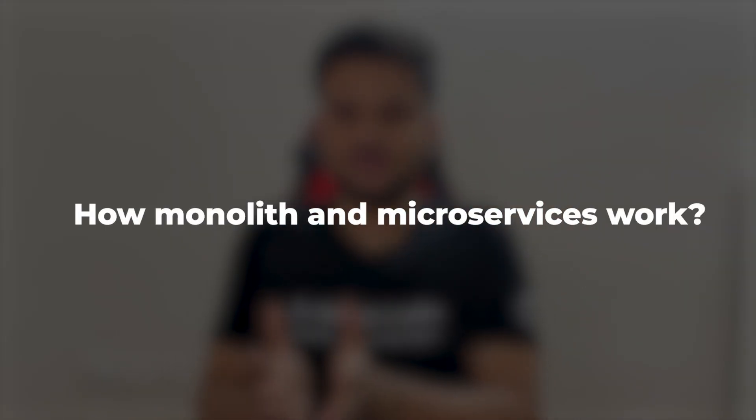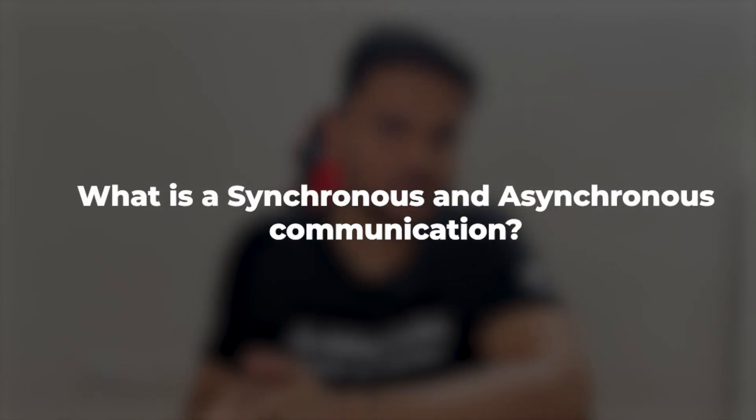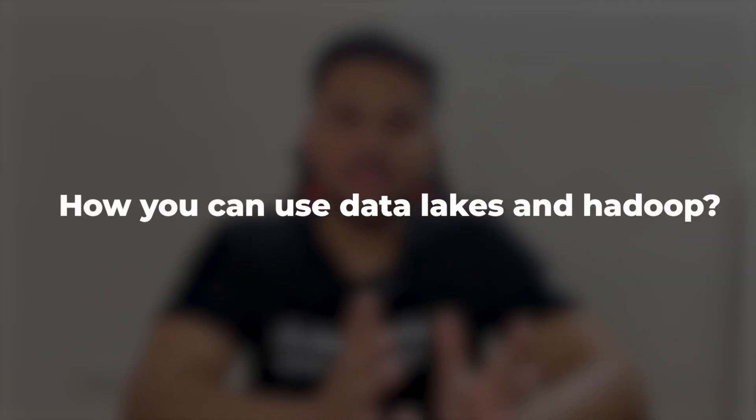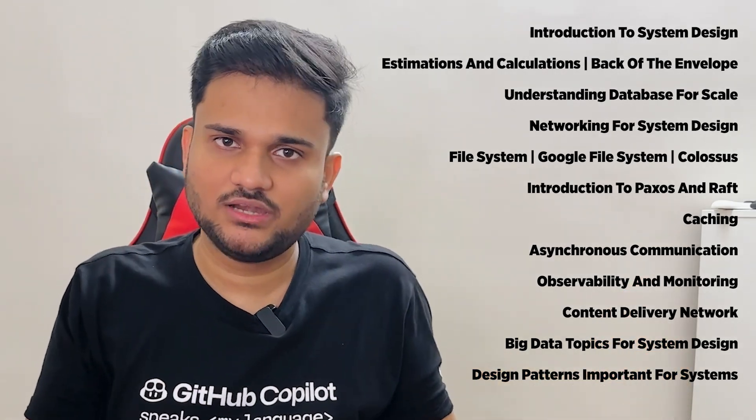We'll cover how monoliths and microservices work, how microservice inter-service communication happens, synchronous vs. asynchronous communication, and how messaging queues work. We'll show how message brokers like RabbitMQ and alternatives like Kafka work, with Kafka demonstrations included. We've also added dedicated introductions to big data topics like streaming concepts, data lakes, and Hadoop — all important for a system design journey. The full list of fundamental topics will be shown on screen.